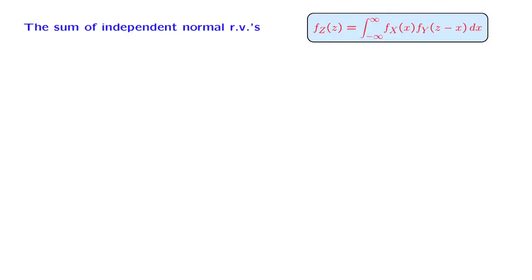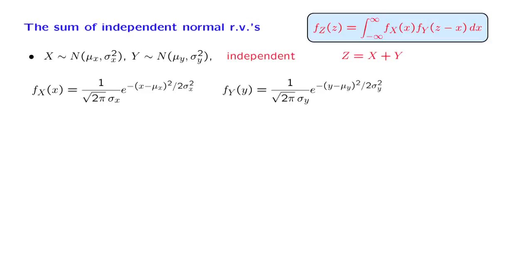In this brief segment, we discuss an important application of the convolution formula. Suppose that X is a normal random variable with a given mean and variance, so that the PDF of X takes this form.